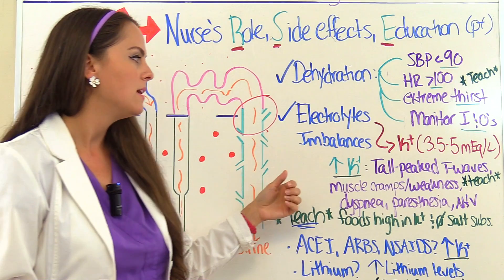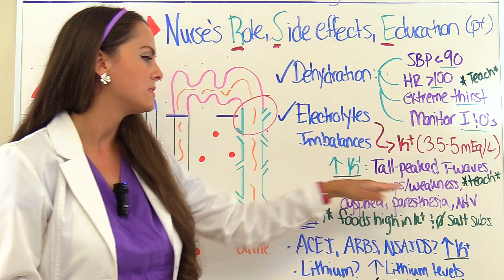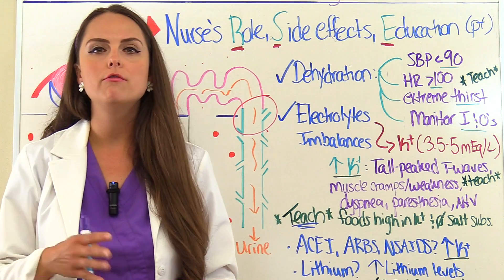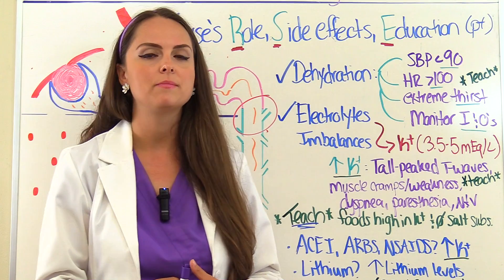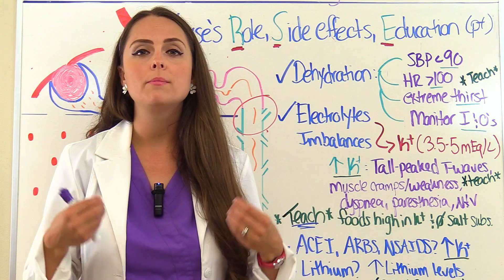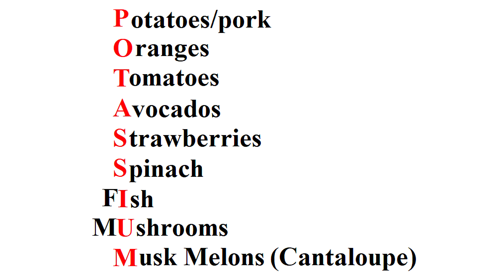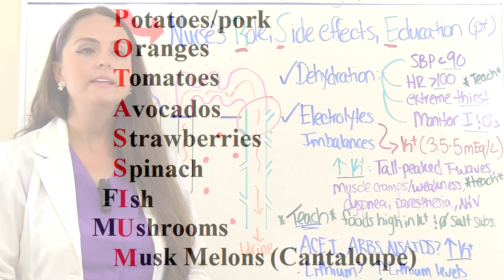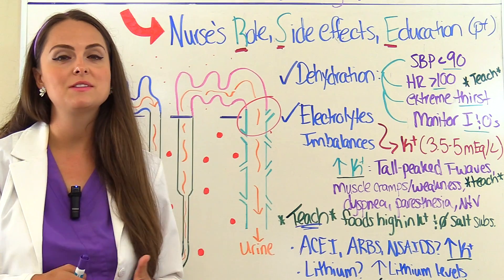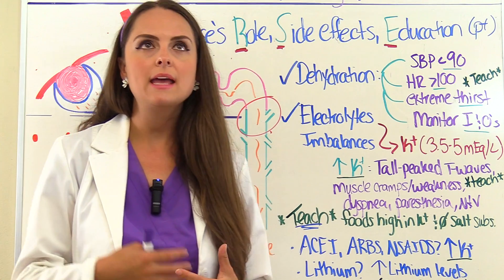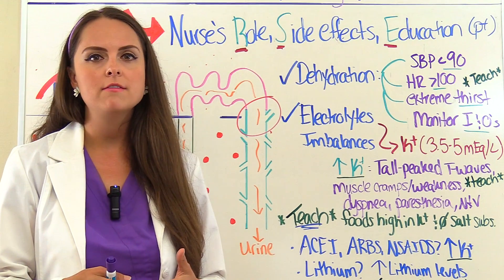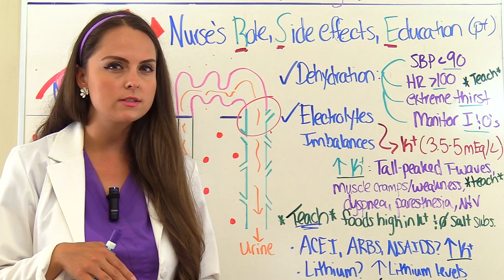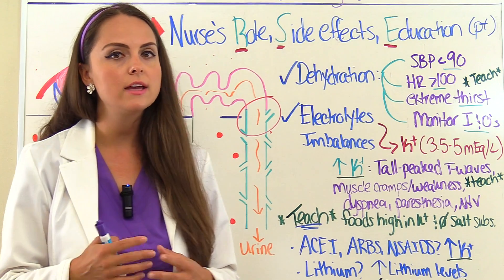Teach patients to avoid foods high in potassium since these medications already spare potassium. To remember high-potassium foods, think of the word POTASSIUM: potatoes and pork, oranges, tomatoes, avocados, strawberries, spinach, fish, mushrooms, and muskmelons like cantaloupe. Also, tell patients to avoid salt substitutes because those actually contain potassium. Many patients on potassium sparing diuretics for heart failure or high blood pressure may have been told to watch their salt and may use a salt substitute without knowing it's high in potassium — so educate them about that.